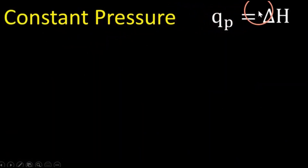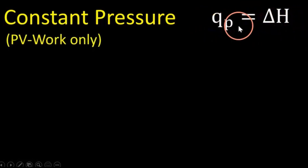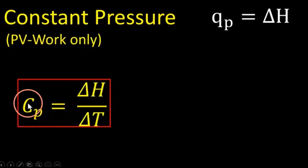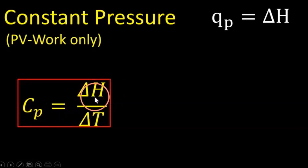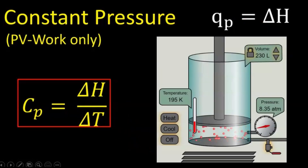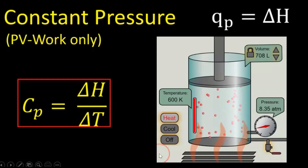One is under constant pressure. Under constant pressure, the energy transferred as heat equals the change in enthalpy — I derived this in a previous video — and this is true assuming there's no other work other than expansive pressure-volume work. So the heat capacity under constant pressure equals the change in enthalpy divided by the change in temperature.